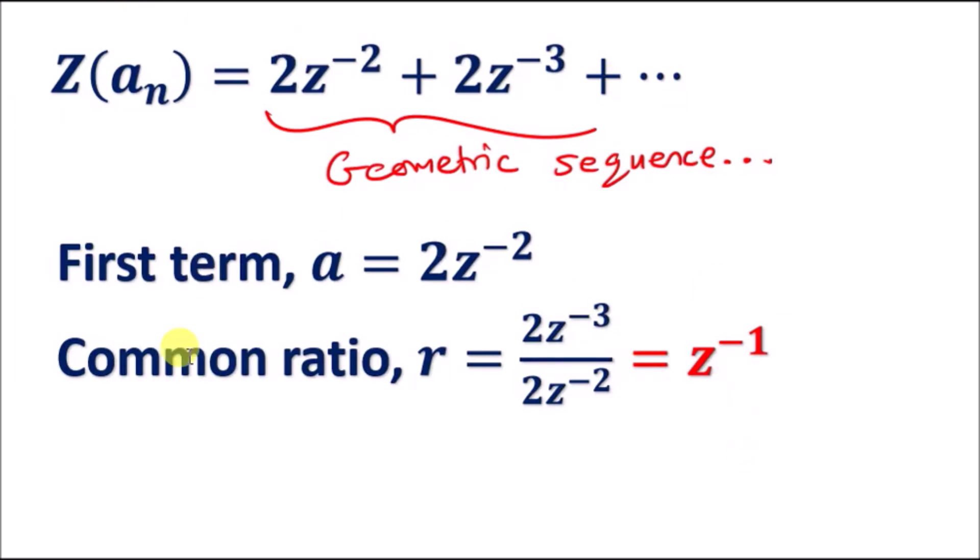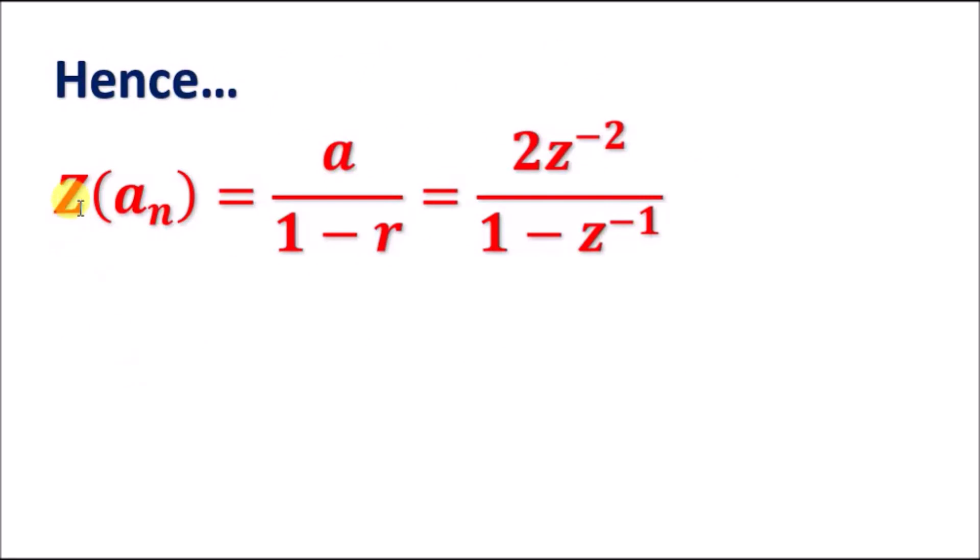All you do is literally just plug into the formula. Hence, the Z-transform at some point a_n is going to be 2z^(-2) over 1 - z^(-1), and that's it. That's literally the Z-transform.